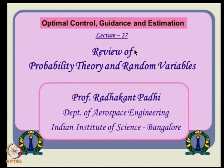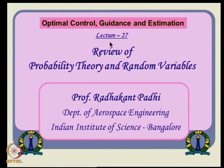Hello everybody. Let us continue with our lecture series on optimal control, guidance, and estimation. We have just started some estimation concepts last time — we studied the LQ observer followed by some overview of Kalman filter implementation. Over the next couple of lectures we will go through the derivation of the Kalman filter to understand it much better, and then talk about some issues of implementation. In this particular lecture, we will primarily concentrate on a review of probability theory and random variables, which is needed for the derivation of the Kalman filter later.